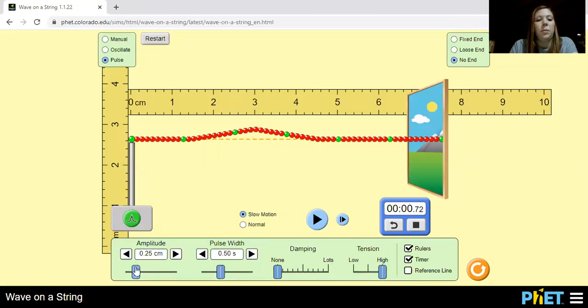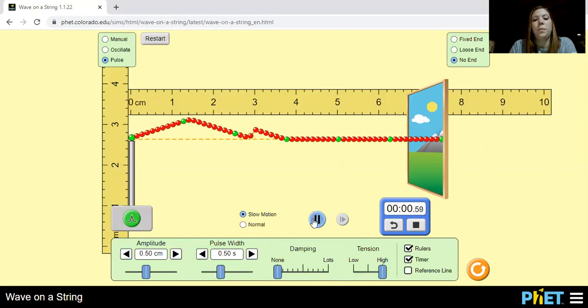Right now we're going to bring the amplitude up to 50. Right now we're going to send the pulse through from 50 amplitude. Pause it. Bring it forward. We're at 0.72 again.